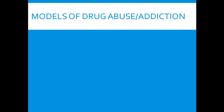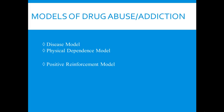In this chapter, the models we're going to discuss in terms of drug abuse and drug addiction are the disease model, the physical dependence model, the psychological dependence model, and the positive reinforcement model. Don't worry about jotting anything down right now because these will each appear on their own slides.